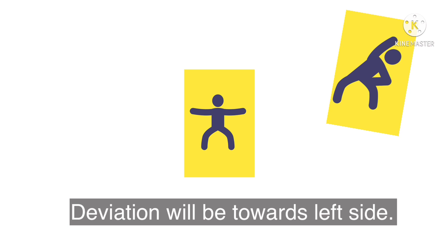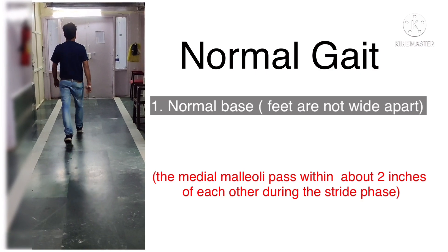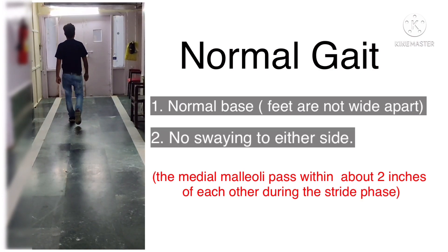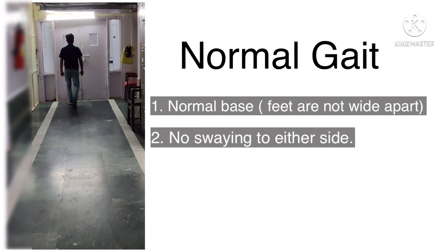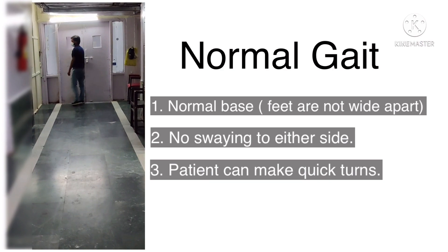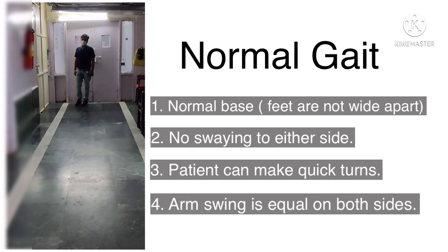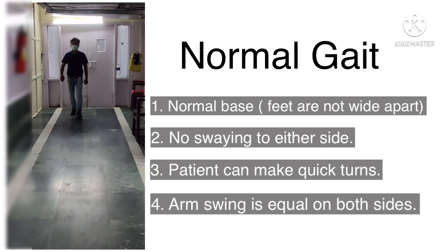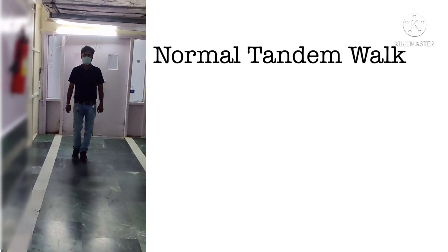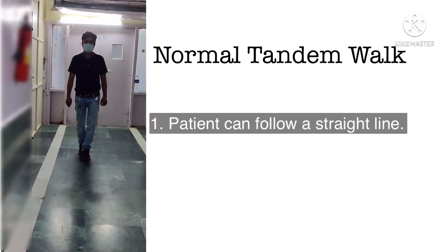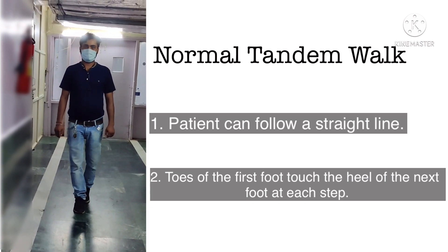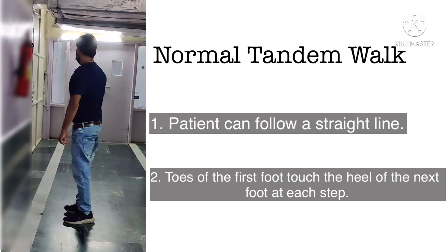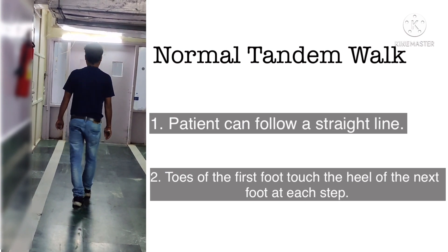Now let us understand this on a patient. In a normal gait, the base is normal, i.e. the feet are not wide apart. The medial malleoli pass within 2 inches of each other during the stride phase. There is no swaying from side to side. The patient can make quick turns and the arm swing is equal on both sides. When a normal person is asked to perform the tandem walk, he can follow a straight line. The toes of the first foot touch the heel of the next foot at each step, and hence he is able to perform a tandem walk.